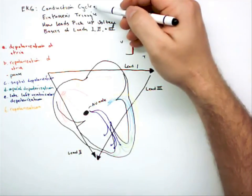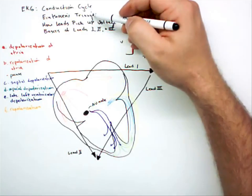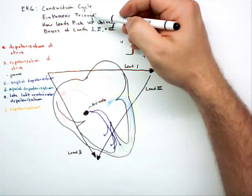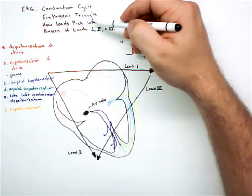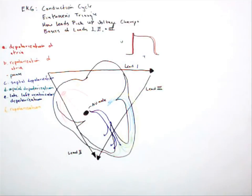Okay, so now we have this conduction cycle, which really just describes voltage changes in the heart. We've got Einthoven's triangle, which describes the leads that will pick up those voltage changes. The next thing is how do those leads pick up those voltage changes.